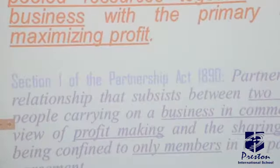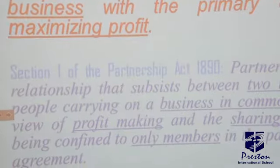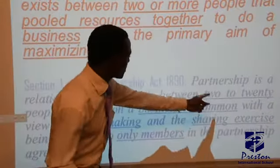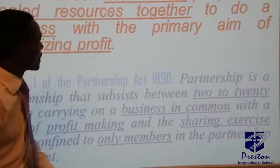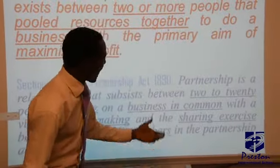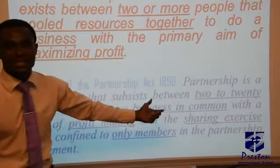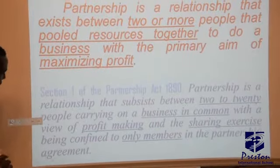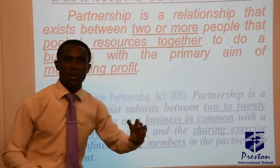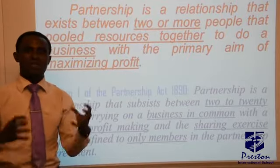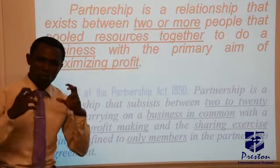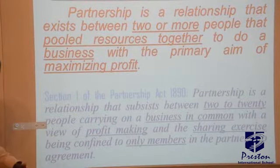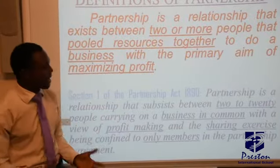According to Section 1 of the Partnership Act, the most reliable definition of partnership is: a relationship that subsists between two to twenty persons. The minimum is two and the maximum is twenty people who can form a partnership, carrying on a business in common — meaning the partners must be in unity, in oneness — with a view of making profit, the sharing being confined only to members of the partnership agreement.